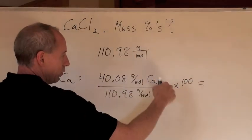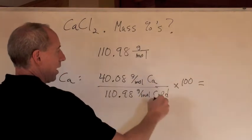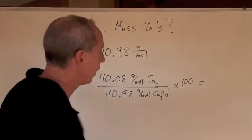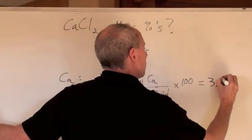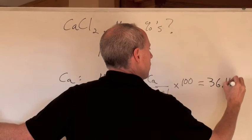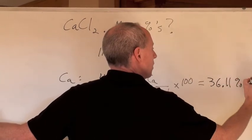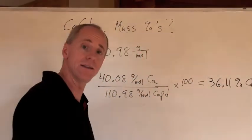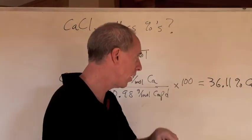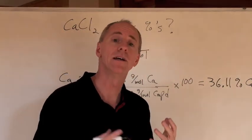You don't have to write that down with these units here. Grams per mole cancels, times 100, and you're going to get, in this case, 36.11 percent calcium in that compound, per 100 grams of that compound.